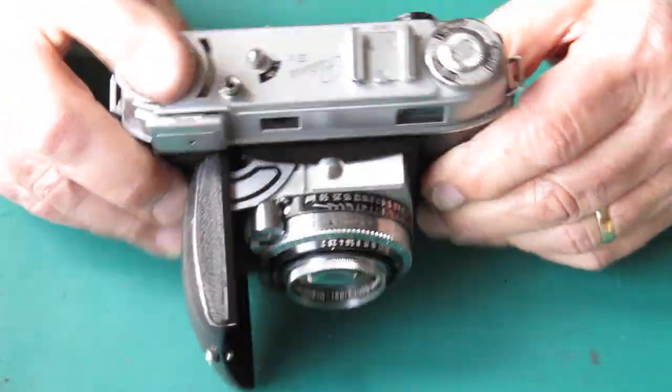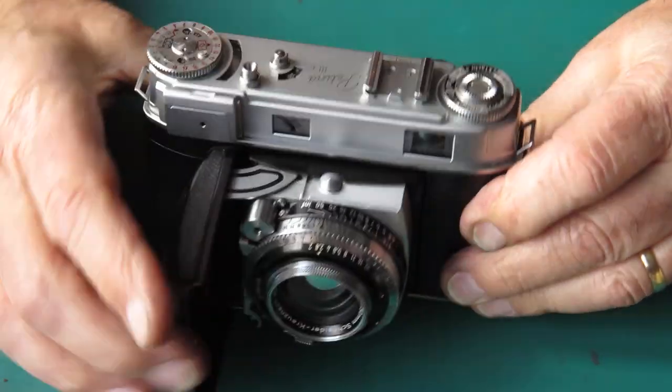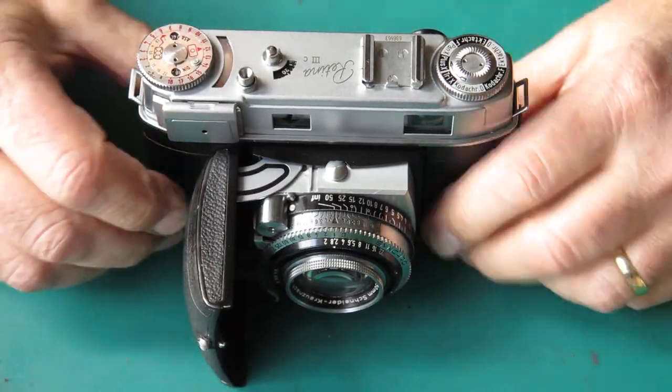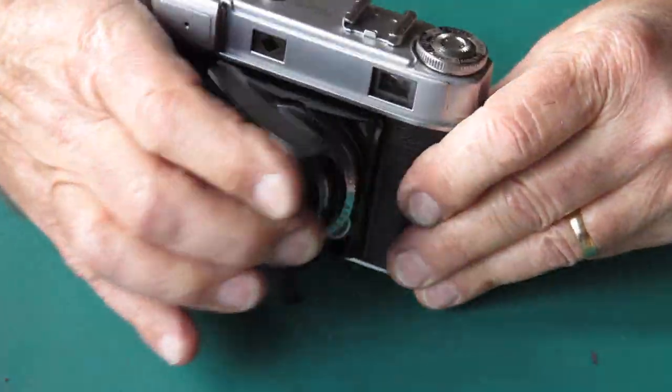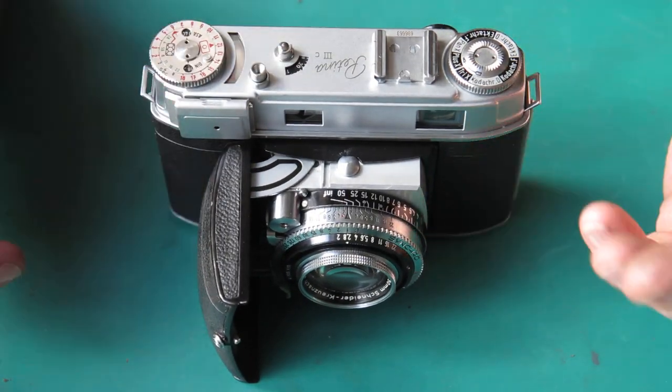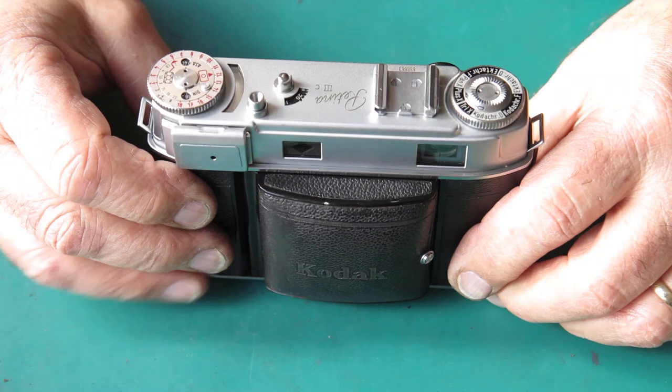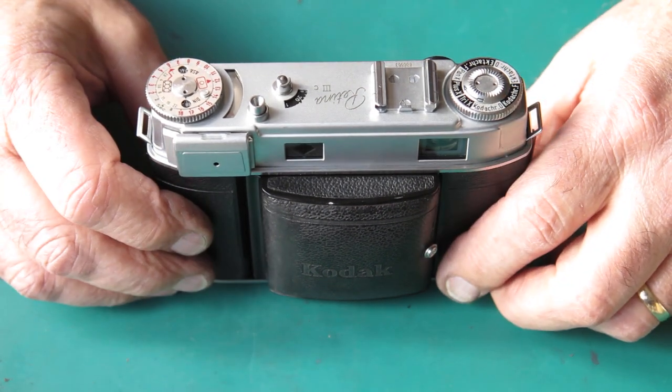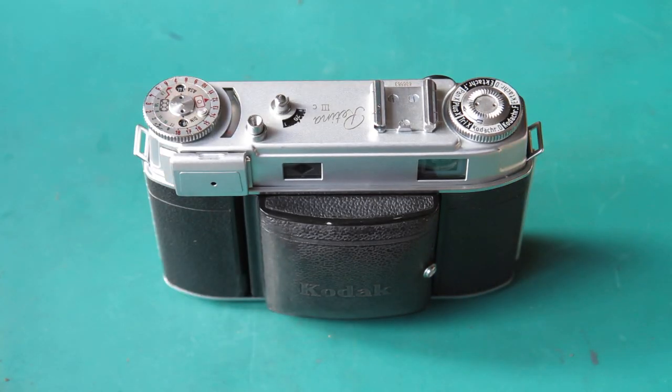And that is it for our Retina 3C camera that had fallen off the tripod and wouldn't open and wouldn't close and didn't advance properly. And the parts count, zero. We didn't need any parts. It was, nothing was broken. Things were bent, they were straightened out. Things were dirty, they needed cleaning. Things needed lubricating, and that was it. So there's our Retina 3C that fell off the tripod. I'm sure the owner's going to be very pleased to see it come home. Thanks for watching.